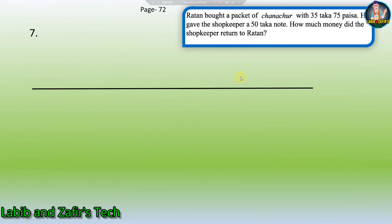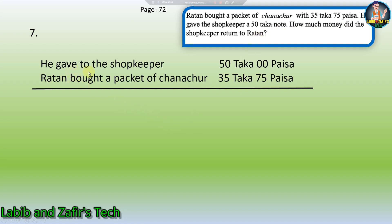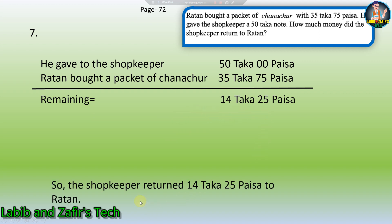Now let's go to our seventh word problem. Ratan bought a packet of Chana Chur for 35 Taka 75 Persha. He gave the shopkeeper a 50 Taka note. How much money did the shopkeeper return to Ratan? He gave the shopkeeper 50 Taka 0 Persha. Ratan bought Chana Chur for 35 Taka 75 Persha. Remaining: 14 Taka 25 Persha. The shopkeeper returned 14 Taka 25 Persha to Ratan. This is our seventh word problem.